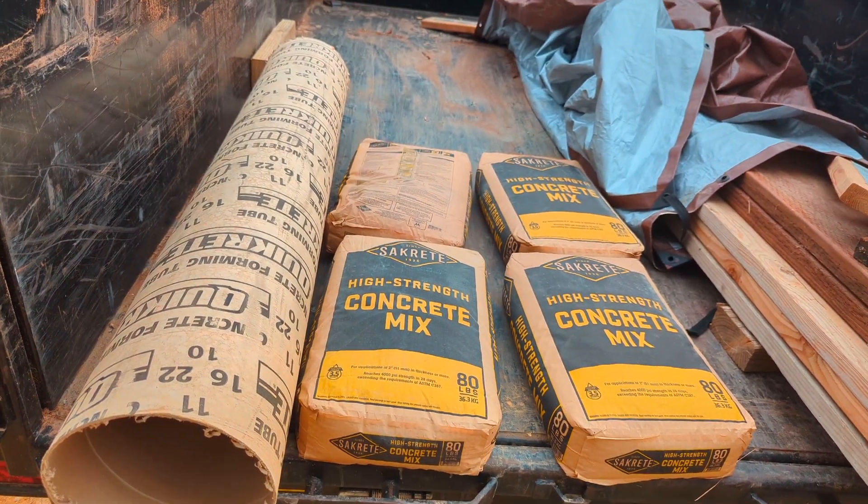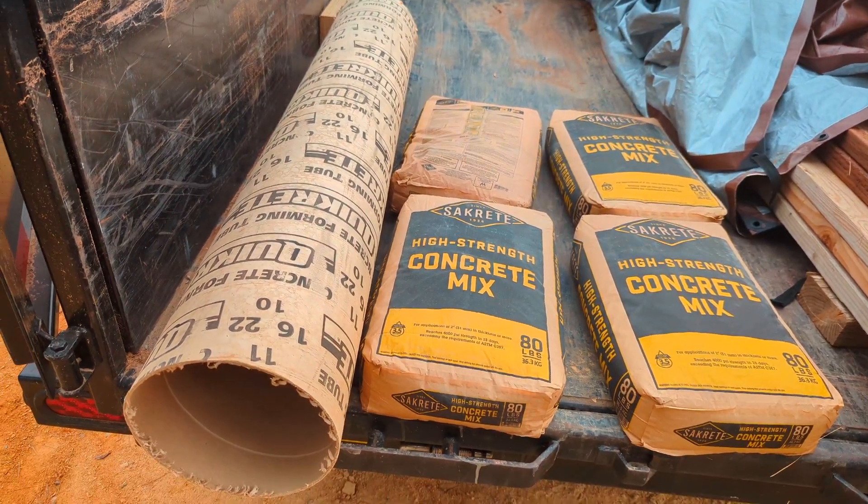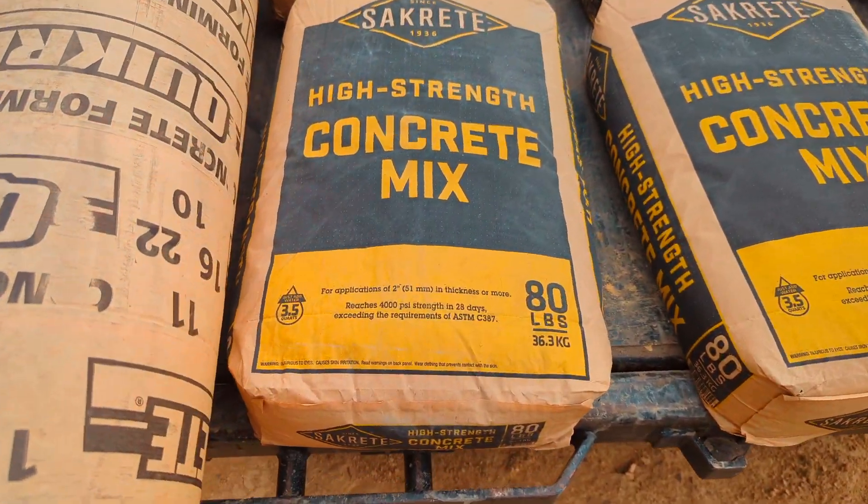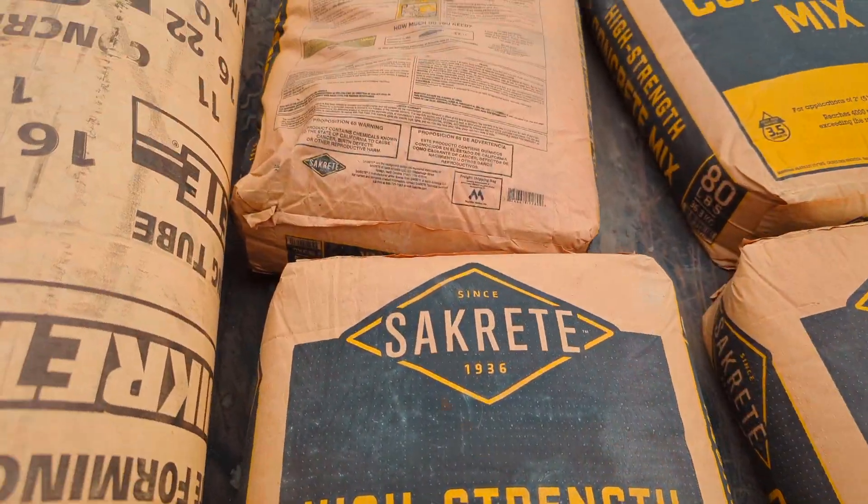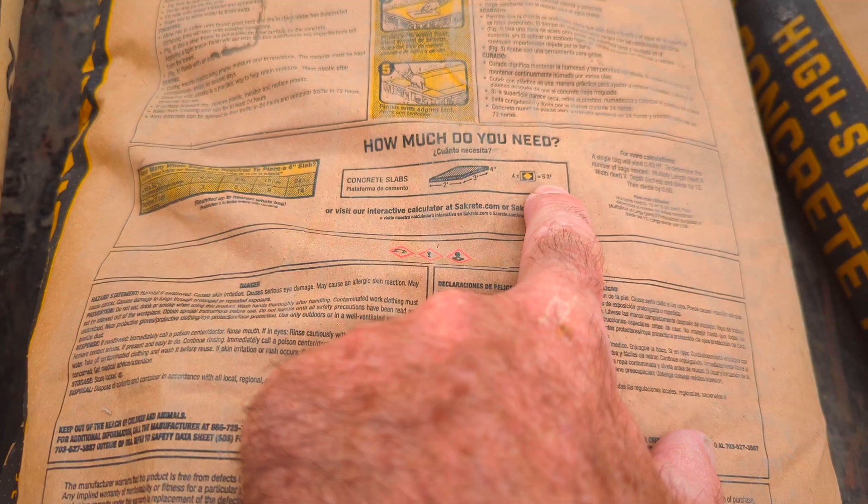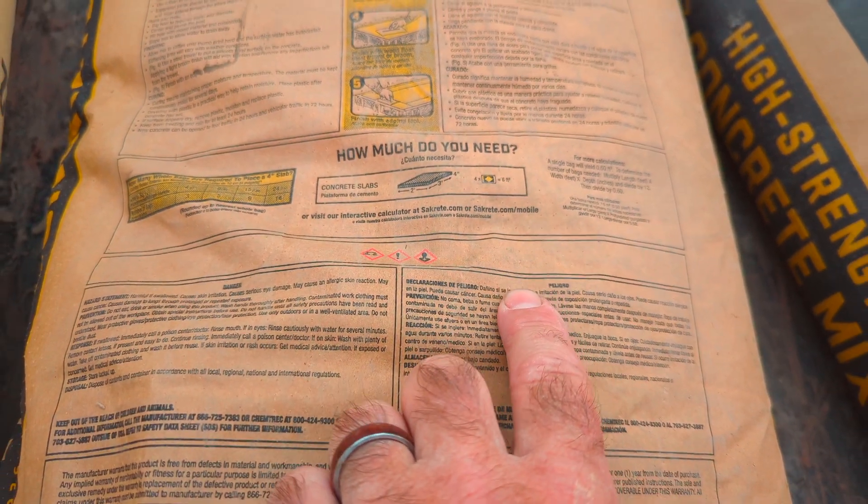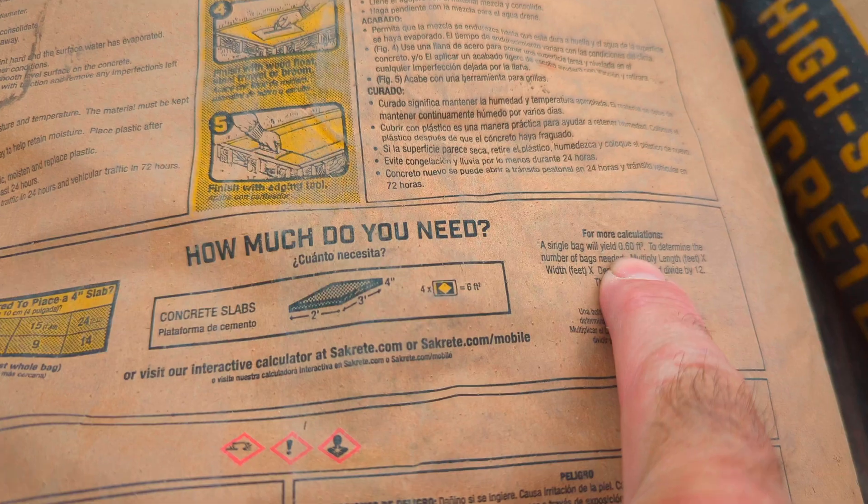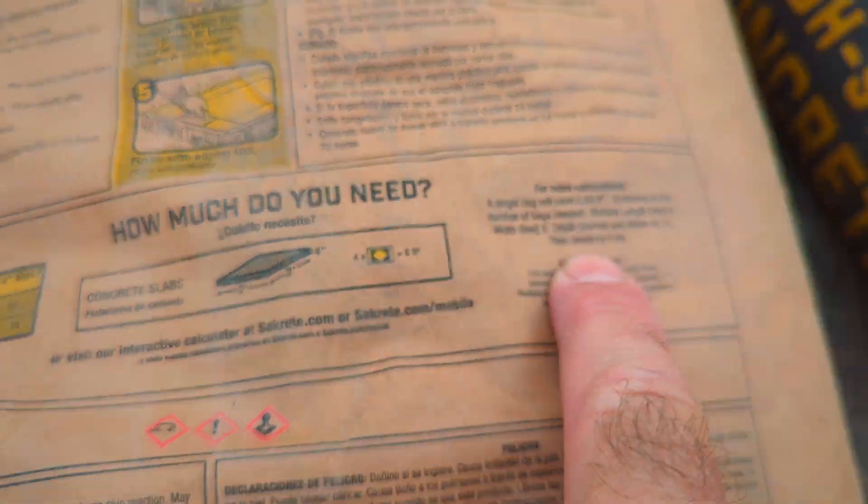All right, here's a problem right here. Here are my leftover materials. I have this tubing for form making. I have an 80-pound bag of concrete. That bag makes 0.6 of a cubic foot right there. So a single bag yields 0.6 cubic feet.